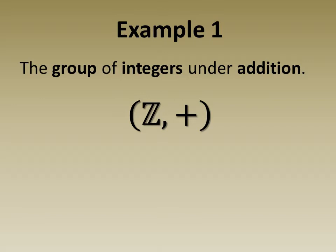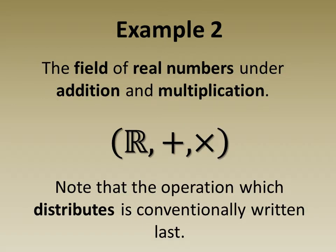In example 1 we have the group of integers under addition. In example 2 the algebraic structure is a field of real numbers under addition and multiplication. Note that the operation which distributes is conventionally written last.